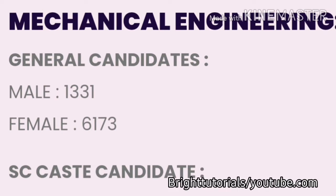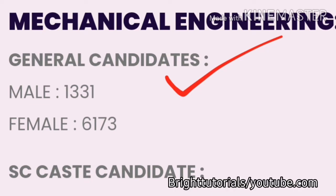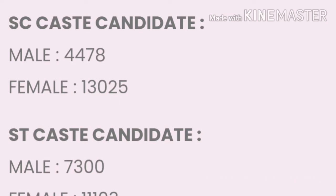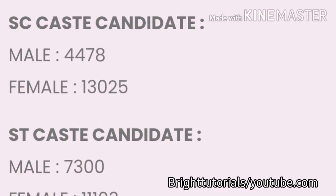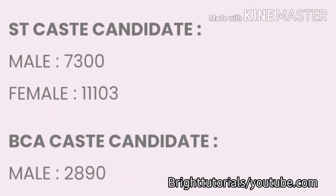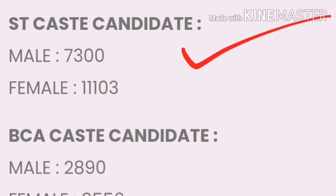Now we will start with Mechanical Engineering. For general male candidates the cutoff is 1331 and for female candidates it is 6173. For SC caste: male cutoff is 4478 and female cutoff is 13025. For ST caste: male cutoff is 7300 and female cutoff is 11103.